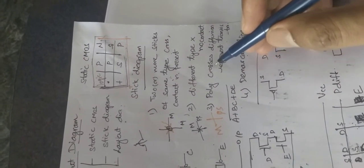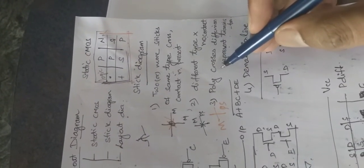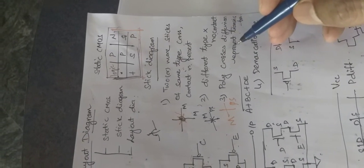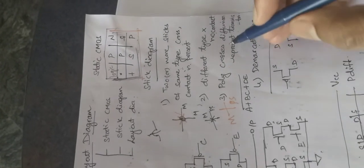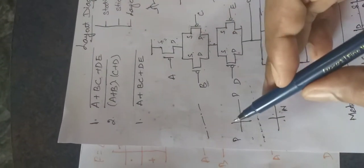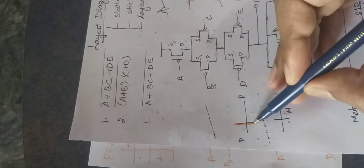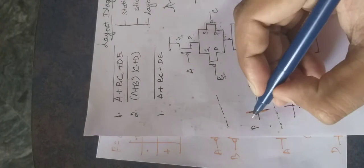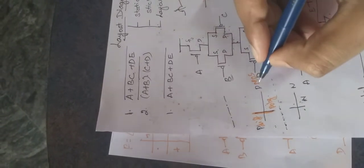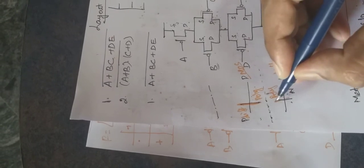The third rule is about how to create PMOS and NMOS transistors in the stick diagram. You must make a polysilicon line cross a diffusion line. Whenever a polysilicon line crosses a P-diffusion line, a PMOS transistor is created. Similarly, whenever a polysilicon line crosses an N-diffusion line, an NMOS transistor is created.